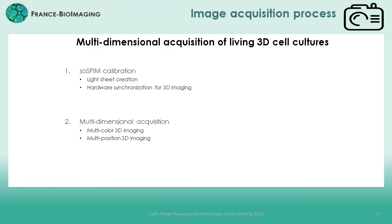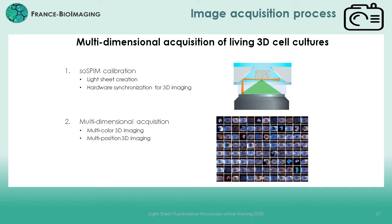Now that we have prepared our device with our samples, I will show you how to perform a 3D imaging experiment using the SOSPIN system, and more specifically, how to set up a time-lapse multiposition experiment to monitor the growth of several spheroids over time, which is a clear advantage of the SOSPIN technology. First, I will show how to calibrate the system to ensure optimal 3D imaging. Then, we will parametrize an experiment to perform 3D multicolor imaging and 3D timelapse multiposition imaging combining our SOSPIN software with the acquisition software Metamorph.